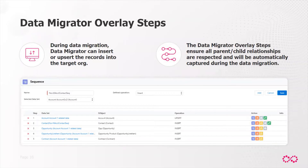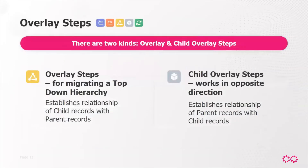As a reminder, data migrator takes a subset of data from your prod org and migrates it to your sandboxes. The data migrator overlay steps are used to ensure that all parent-child relationships and records are respected and automatically captured during your migration process. There are two kinds of overlay steps. The first is the overlay step, designated by a yellow icon. You use this when trying to migrate data that contains a top-down hierarchy — for example, if you filtered on account, which is a top-level object, and now want to migrate associated contacts, cases, opportunities, etc. The overlay steps and child record levels are used to associate records with the parent account, so only related records to that subset of parent records are picked up.